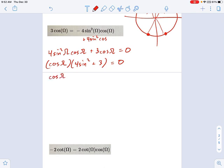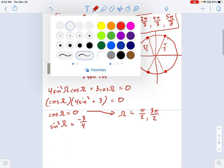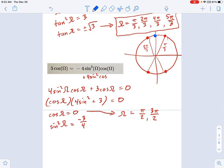So on the one hand, I have cosine omega equals 0. On the other, I have sine squared of omega equals negative 3 fourths. Those are my two solutions that I get here. And the first one, pretty easy. That just means omega equals pi over 2 and 3 pi over 2. Those are the angles on the unit circle that lead to a cosine of 0. That's the x coordinate. These are the points I'm talking about, pi over 2 and 3 pi over 2, where the x coordinate is 0.